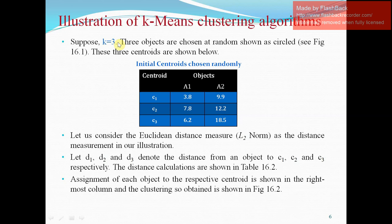Suppose K is equal to three, that is we have to partition it into three clusters. Three objects are chosen at random as it was shown in the previous slide. These three centroid are shown below in a table. C1, C2, C3 for which values have been given for attributes. A1, A2. Let us consider the Euclidean distance, that is L2 norm, as a distance measurement in our illustration.